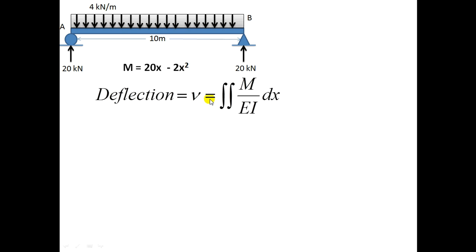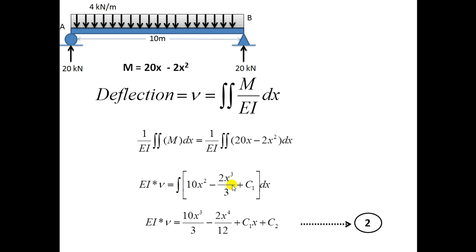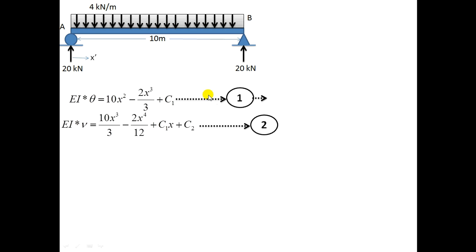Now I will take the second integration of the moment equation for the deflection value. Putting the M value in and using the first integration result from the last slide, I take the second integration. Applying integration to each term separately: the integration of 10x squared gives one term, the integration of 2x cubed over 3 gives another, and the integration of C1 gives C1·x, plus a constant of integration C2. This is equation 2. Equation 1 is used for finding slope and equation 2 is used for finding deflection.